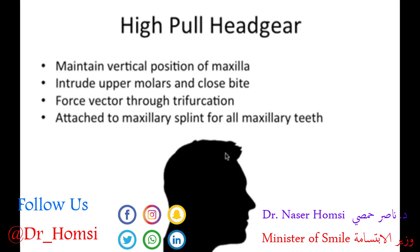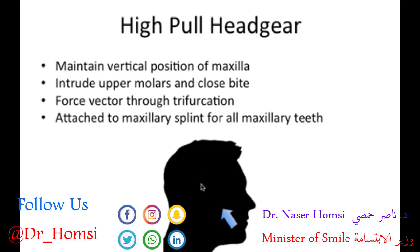Back to our profile silhouette — one treatment option is growth modification using high pull headgear. It pulls on the maxillary teeth upward toward the back of the head, using equal and opposite forces. It attempts to maintain the vertical position of the maxilla so it doesn't go further down, and it intrudes the upper molars to close the bite, because the more those posterior molars are erupted, the more open the bite will be.